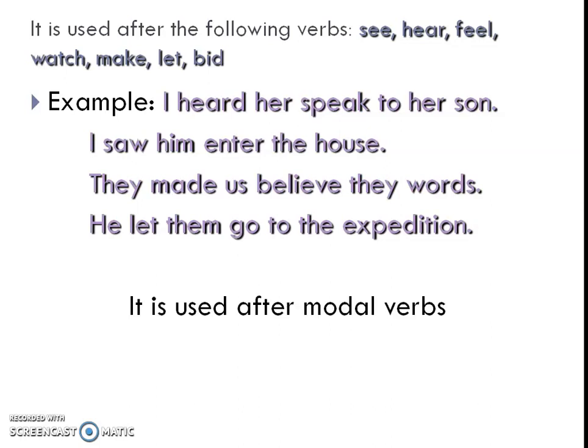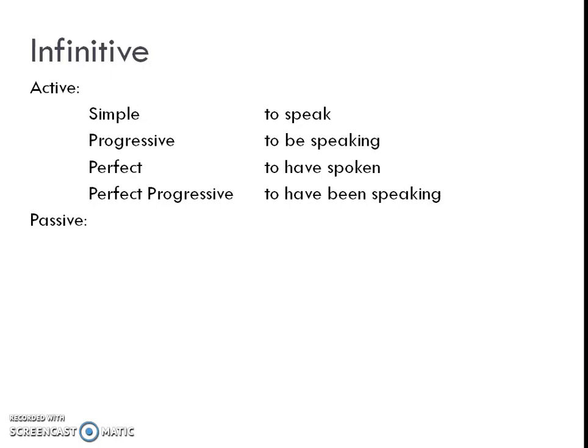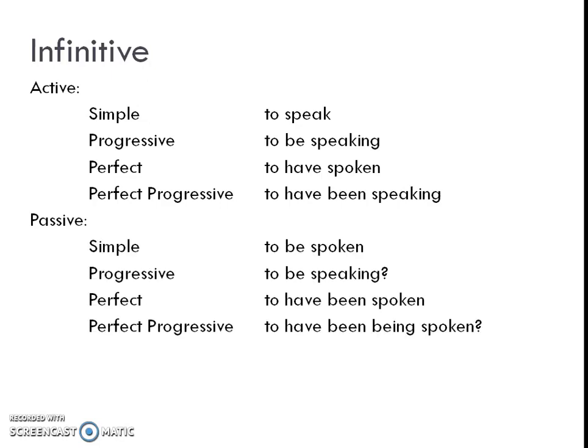The bare infinitive is also used after modal verbs. Now let's see how we can use infinitives in active and passive voice. Active forms: simple — to speak; continuous — to be speaking; perfect — to have spoken; perfect continuous — to have been speaking. Passive forms: to be spoken; to be speaking; to have been spoken; and to have been being spoken. This is how we use these infinitives.